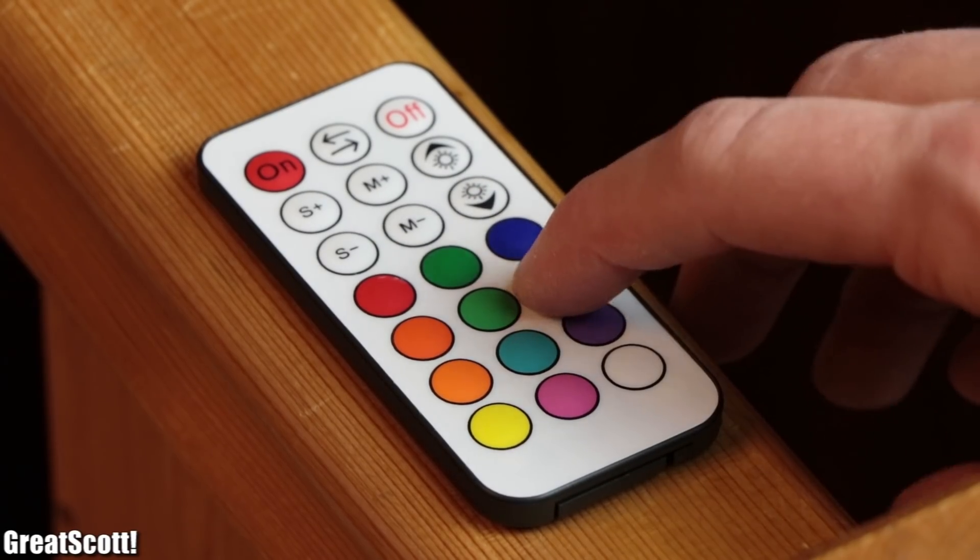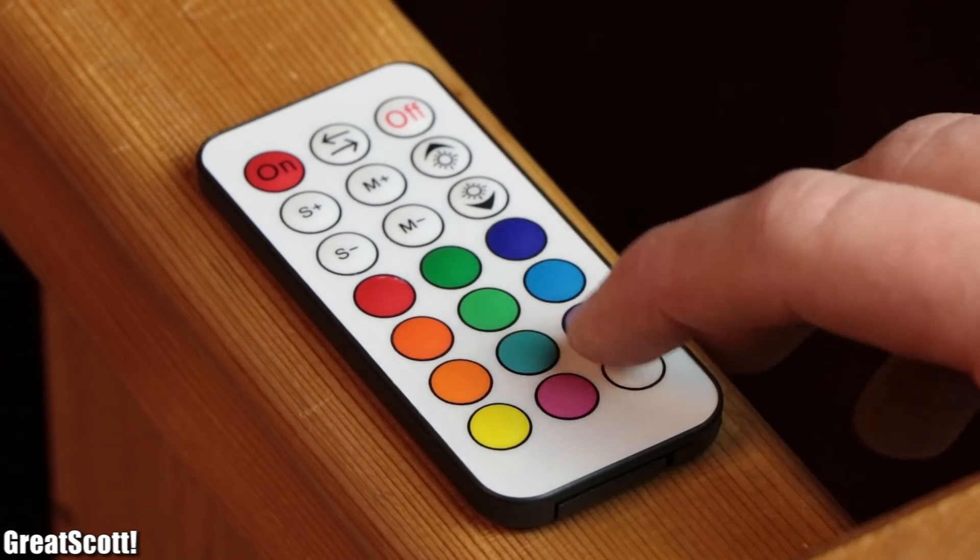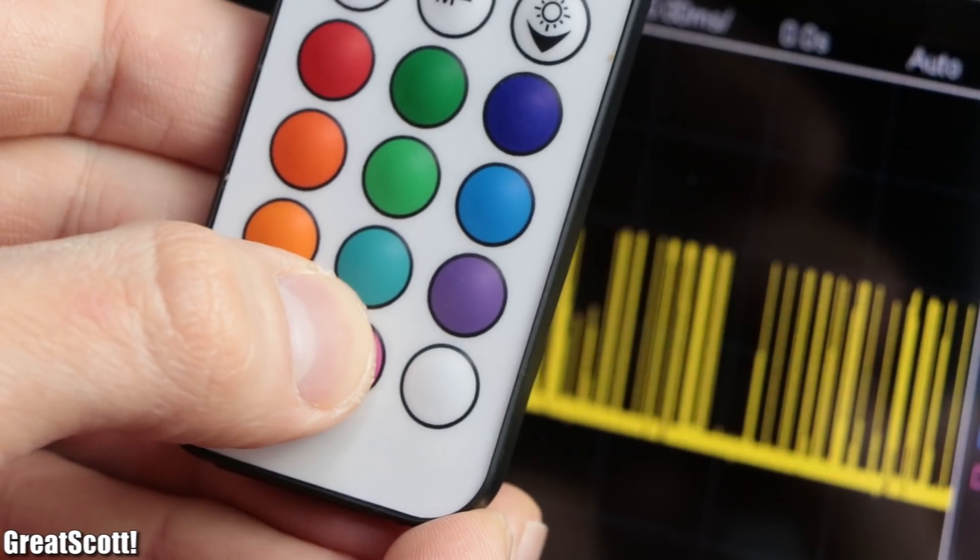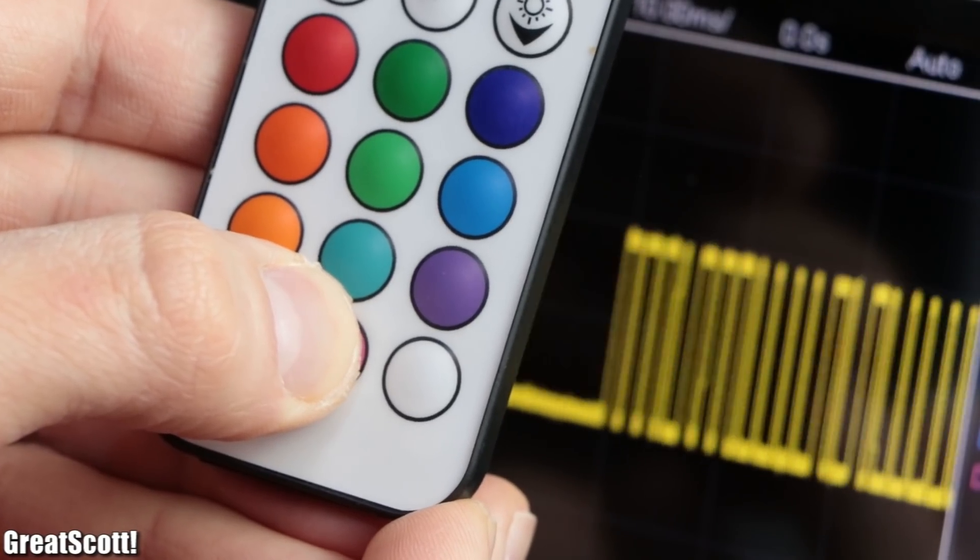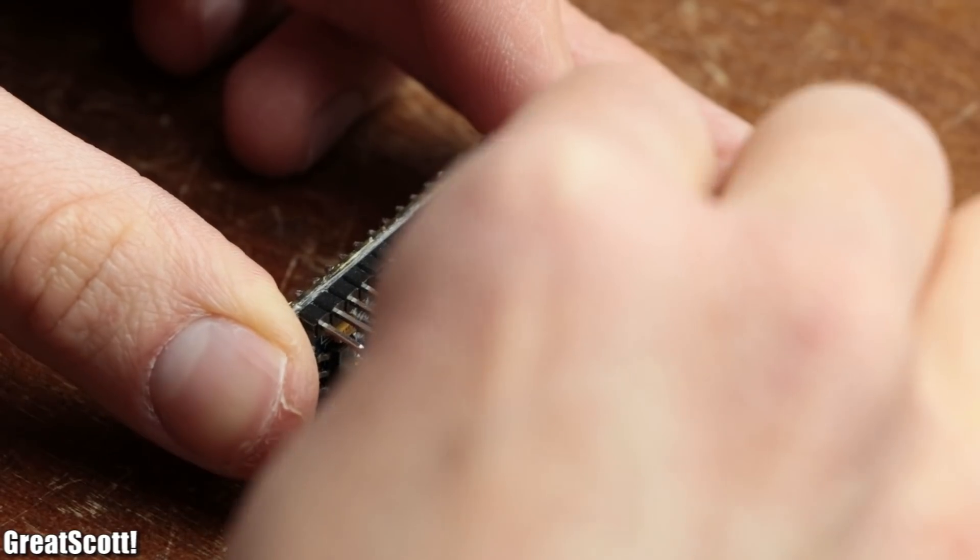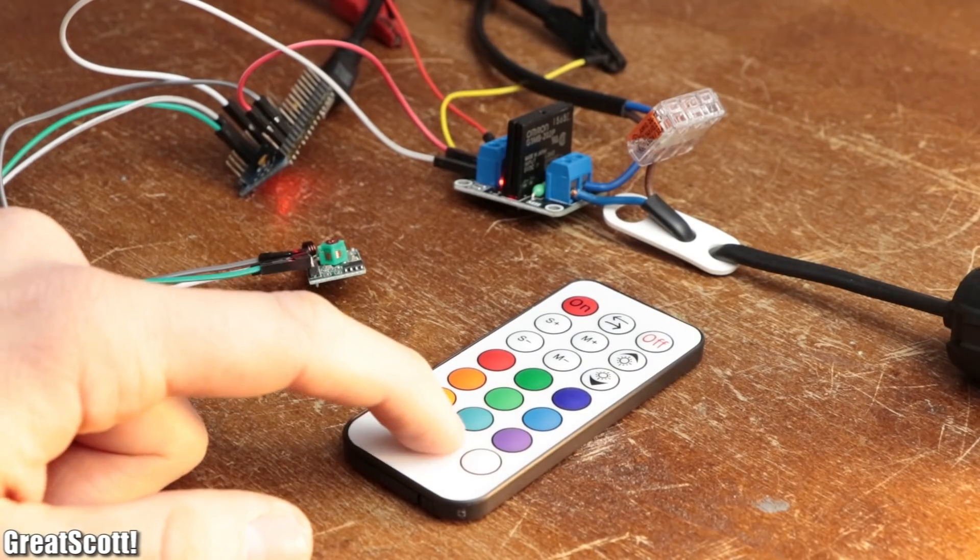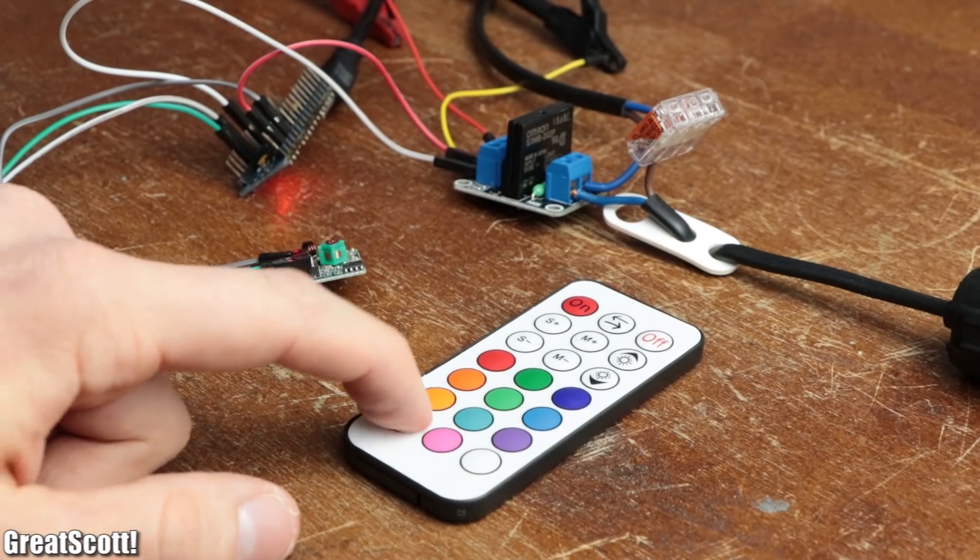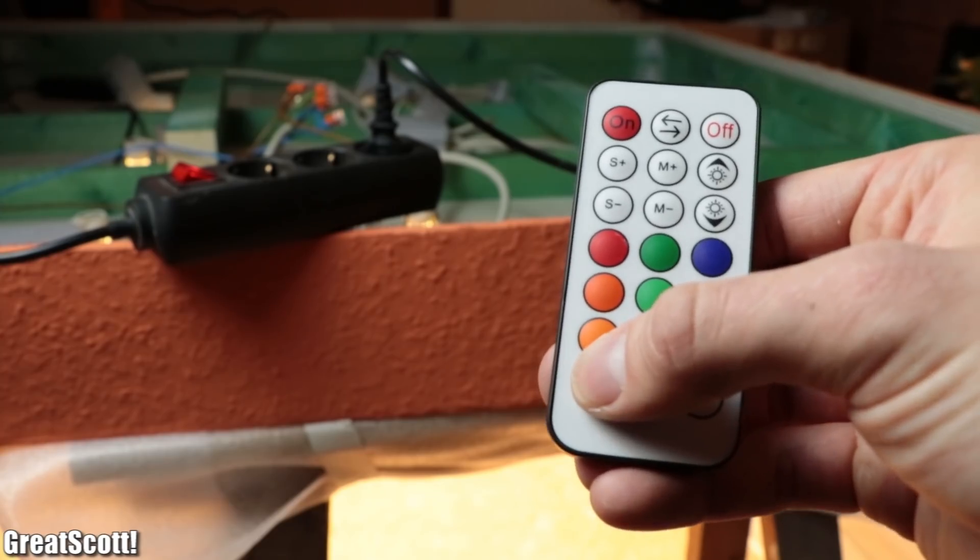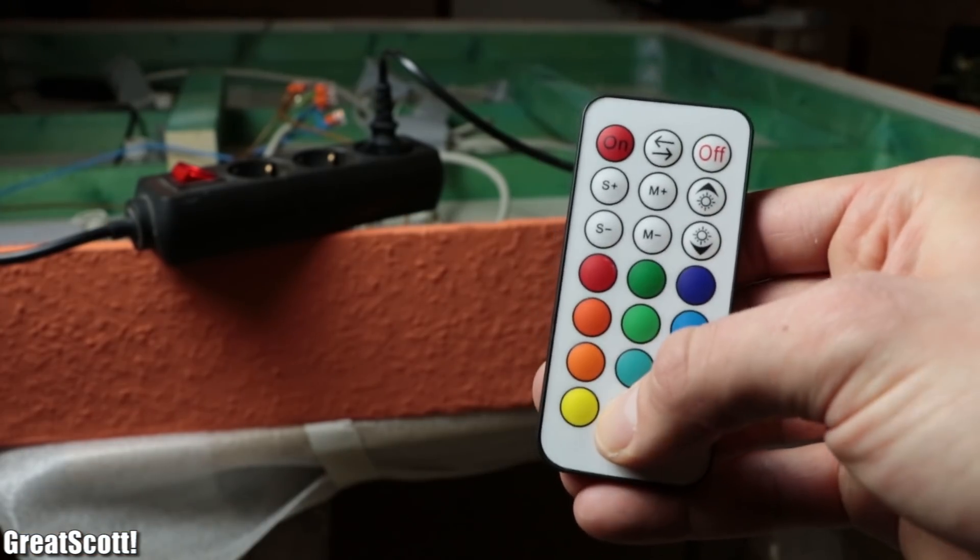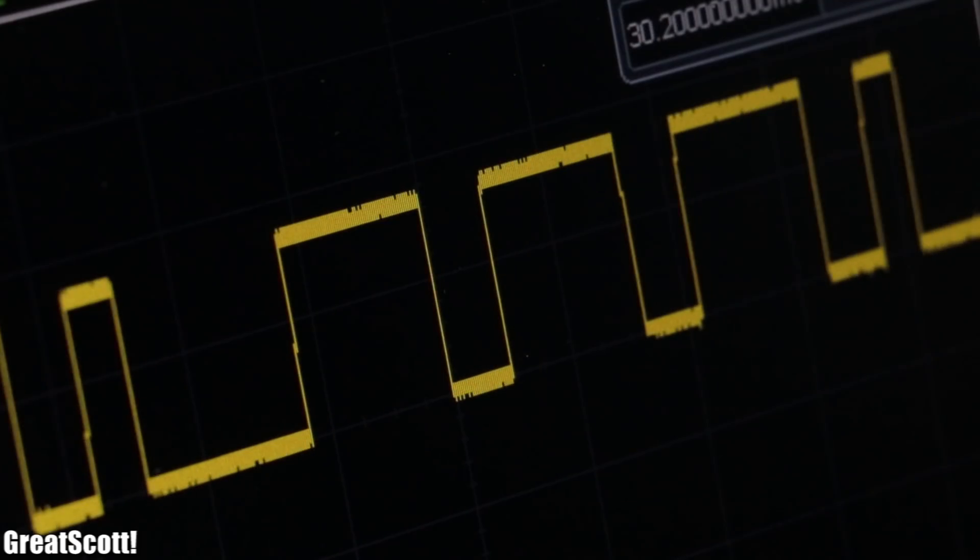But since we got an RF remote for the RGBW LED strips I will be showing you in this video how it communicates with its receiver and how we can use it to talk to a microcontroller and thus control all kinds of things including a solid state relay which can turn on/off the GU10 LED spots and thus solve our initial problem. Let's get started.